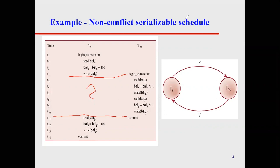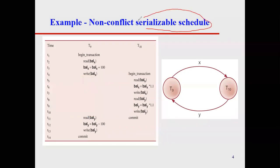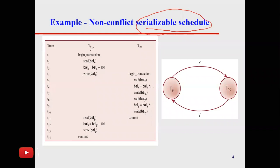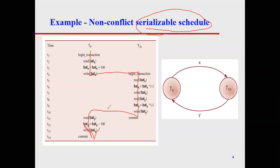And why do we call it serializable? Because first you do this thing, then this thing, then this thing — so this is called serializable. You make things in a serial order. Before, they were non-serial, but you make it a serial one. So this is called a serializable schedule — serializable and non-conflict as well.